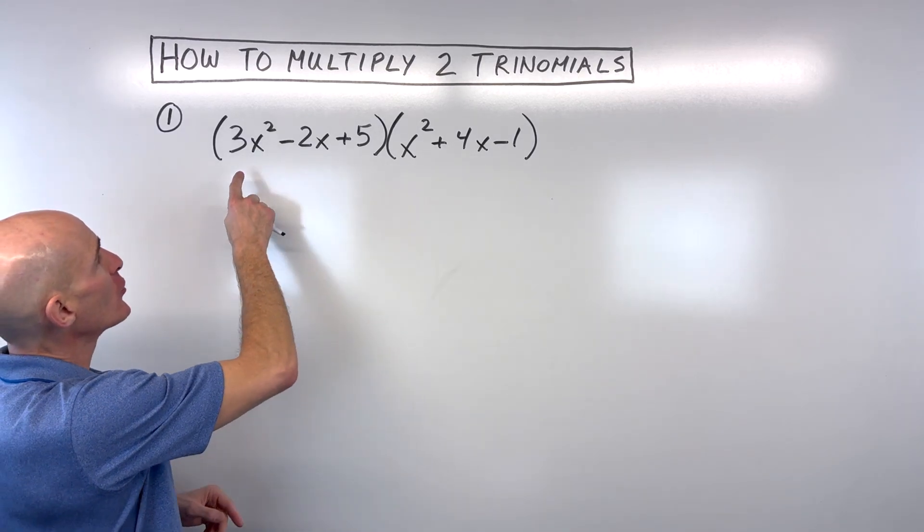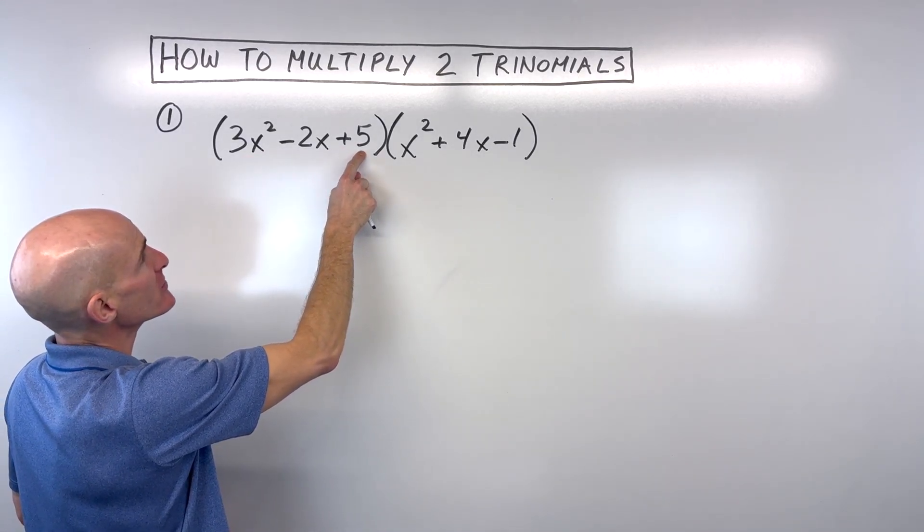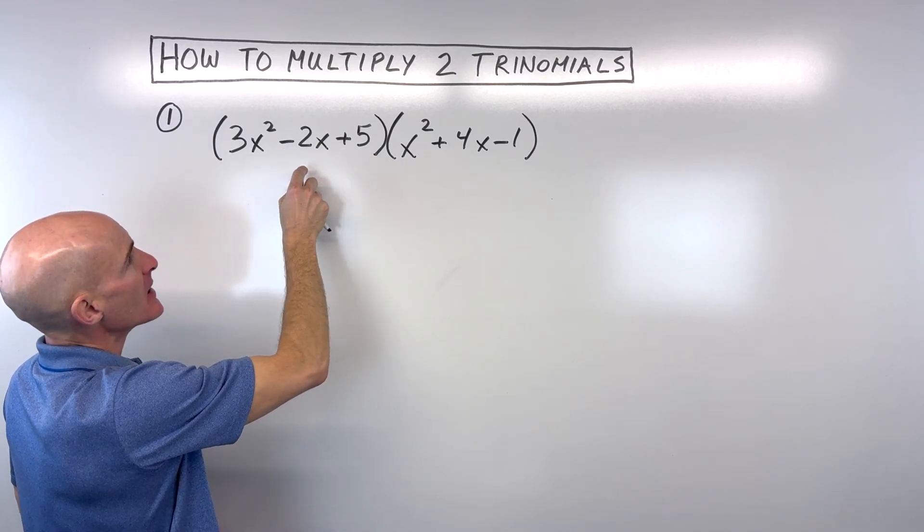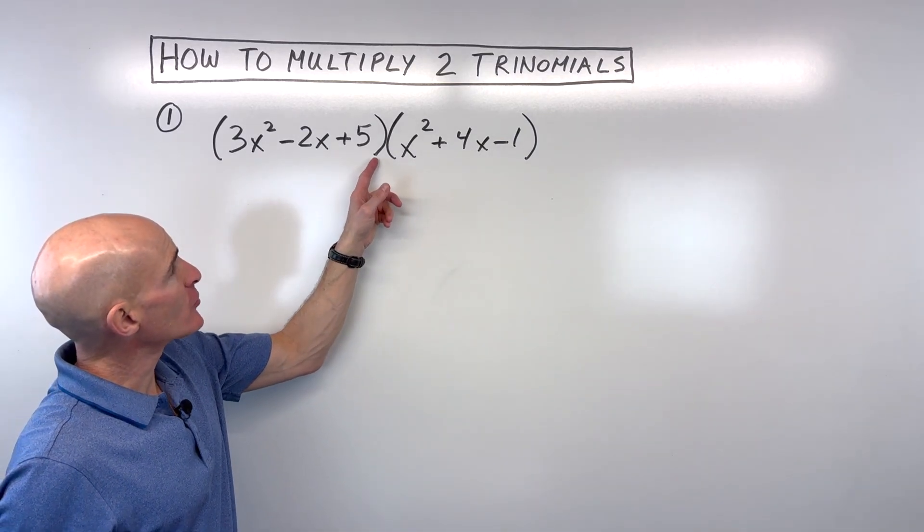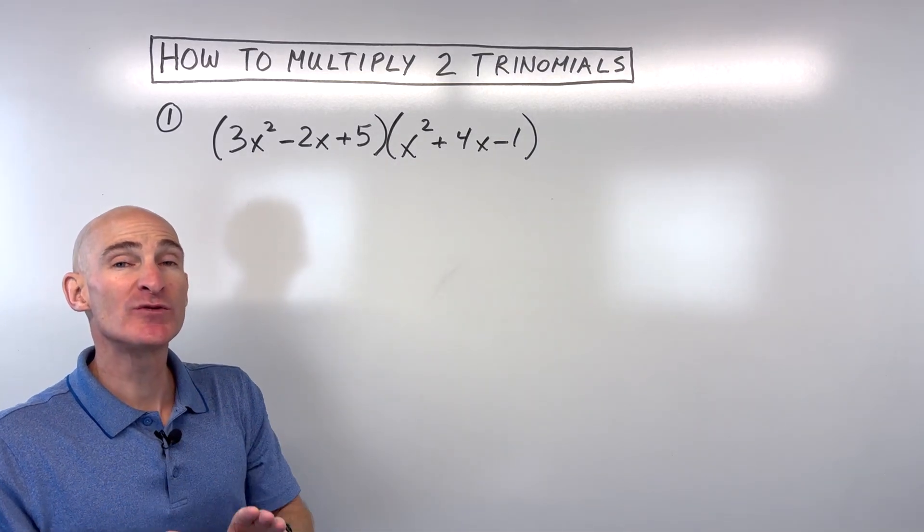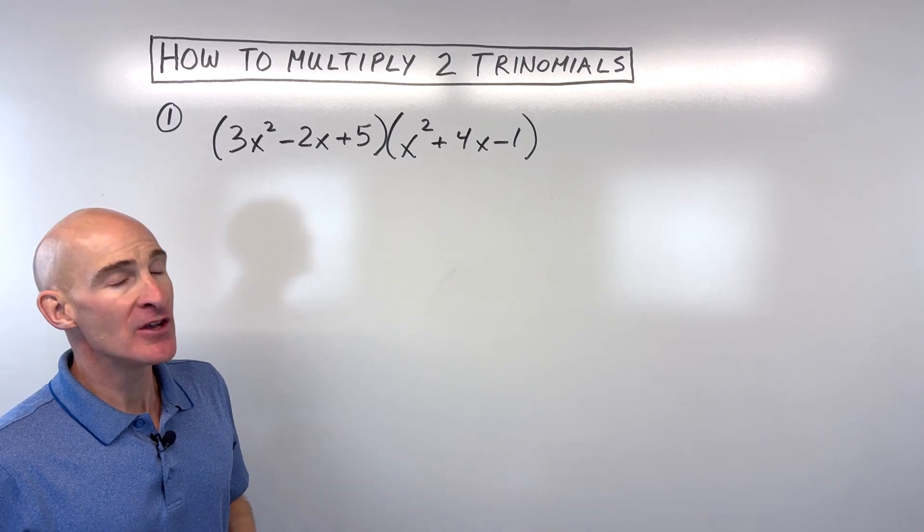So when you talk about a trinomial, it consists of three terms. The terms are separated by minus or plus. And so what we have is a trinomial times another trinomial. And you can see they're right next to each other with nothing in between, which means that they're multiplying together. So how do we do this?